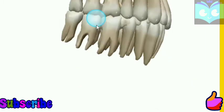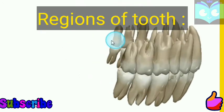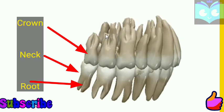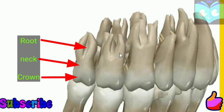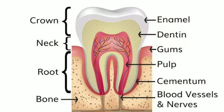Now the last topic is the regions of the teeth. A tooth mainly has three regions: first is the crown, second is the neck, and third is the root. These regions can also be described by their constituents: enamel, dentine, and pulp cavity.